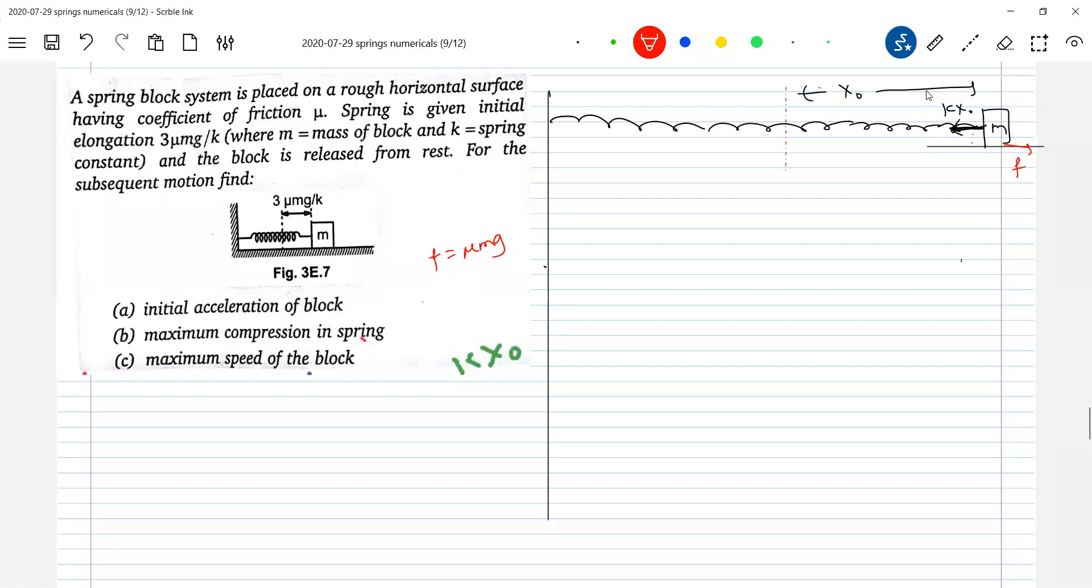So initial elongation is how much? That x0 is how much? So we can write it now. So 3kx0 equal to how much it is? kx0 equal to 3μmg by k. So what is x0? It should be 3μmg by k. So what do you expect when you release? kx0 will overcome friction, so it will accelerate.